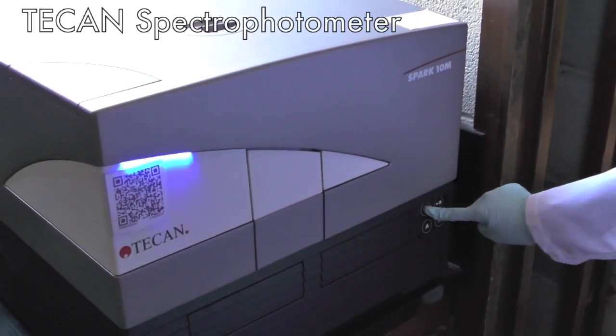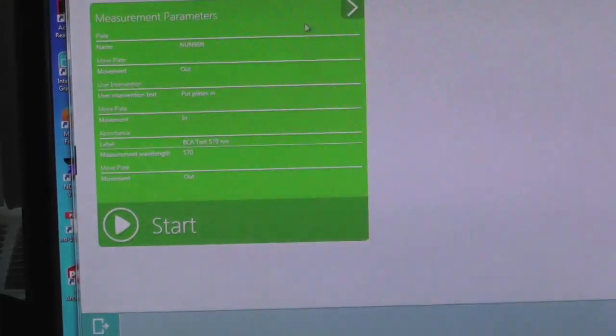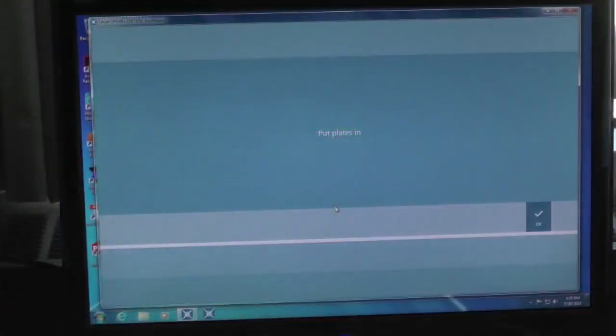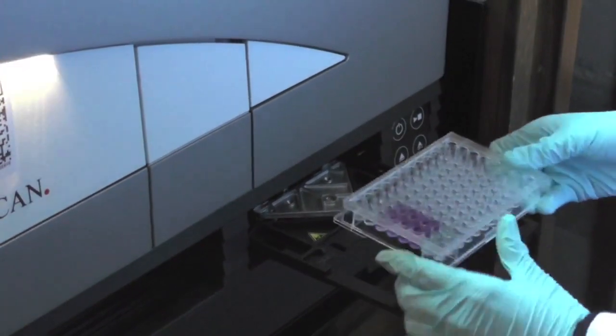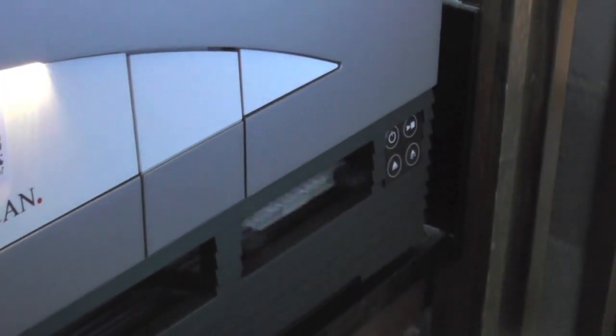Set up the Tecan spectrophotometer to read the absorbance of your sample at 570 nm. Remove the foil cover. Make sure the well A1 is at the left top corner when you place the microplate into the plate reader.